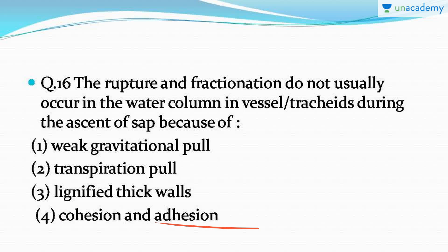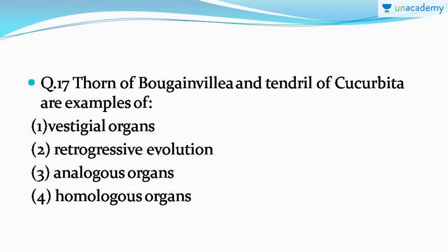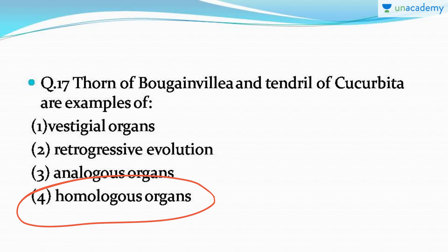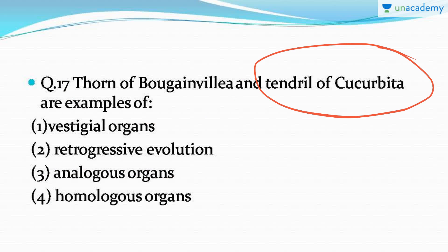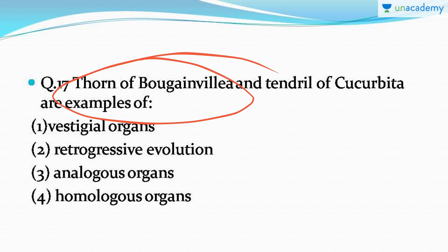Question number 17: thorn of Bougainvillea and tendril of Cucurbita are examples of — it's a very easy yet important question. The correct answer is option number four: homologous organs. Two organs which have similar origin but perform different functions are called homologous organs. The thorn of Bougainvillea and tendril of Cucurbita have the same origin, but the thorn protects it from grazing animals whereas the tendril helps it in climbing upwards.